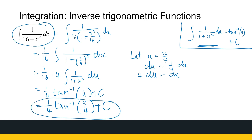You can already see a link between the original question and the answer — first identifying that it will result in an arc tan and seeing where the numbers come from. Rather than memorize the result, take out the common factor, do a quick substitution, and you can get there quite easily.